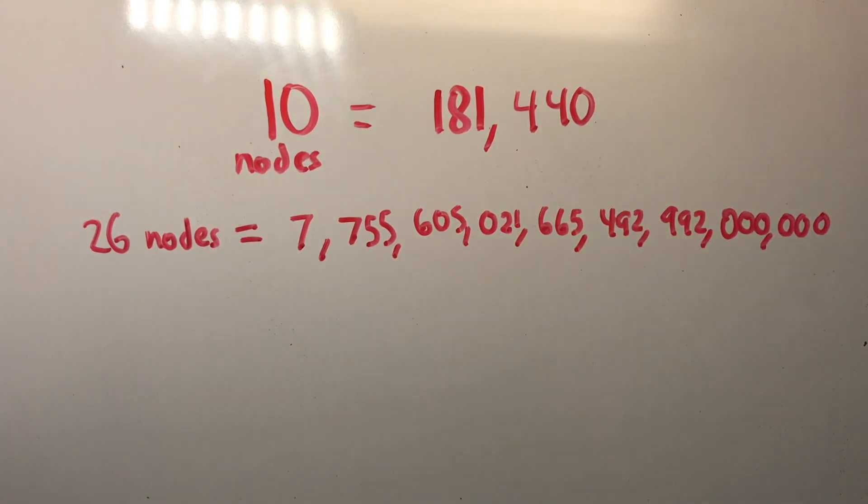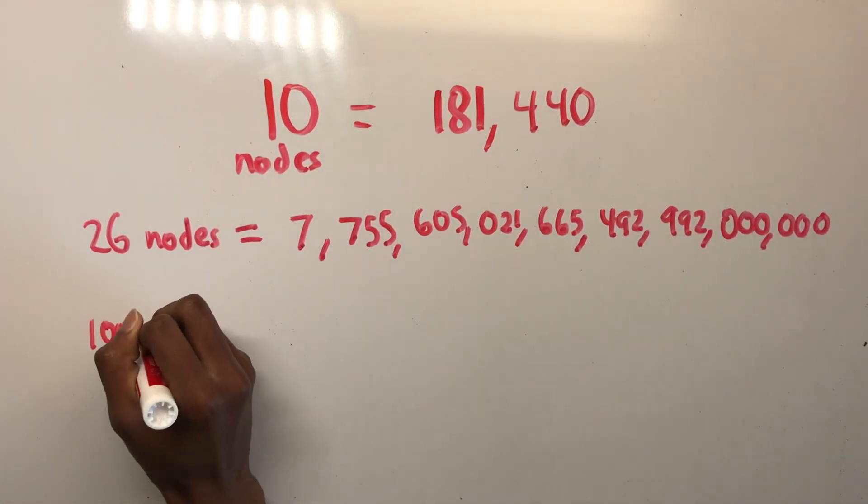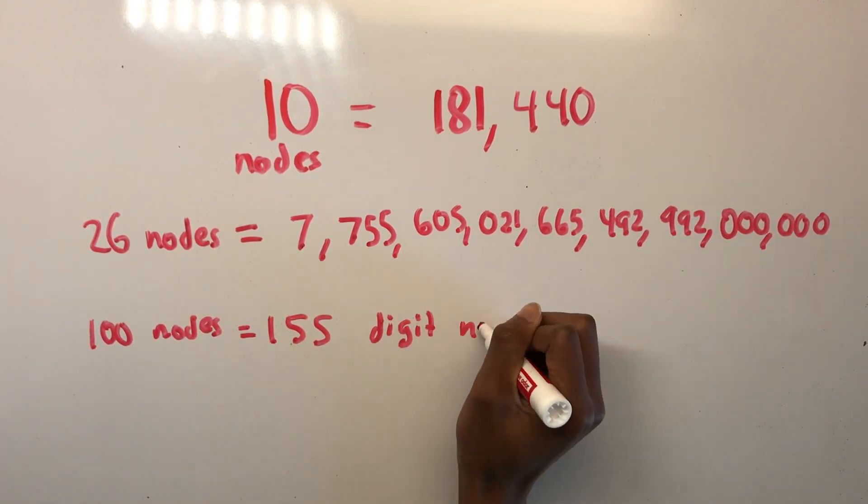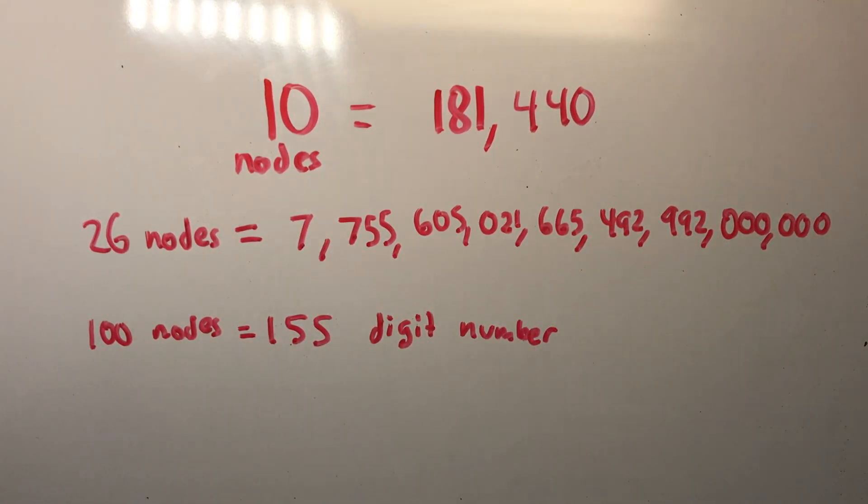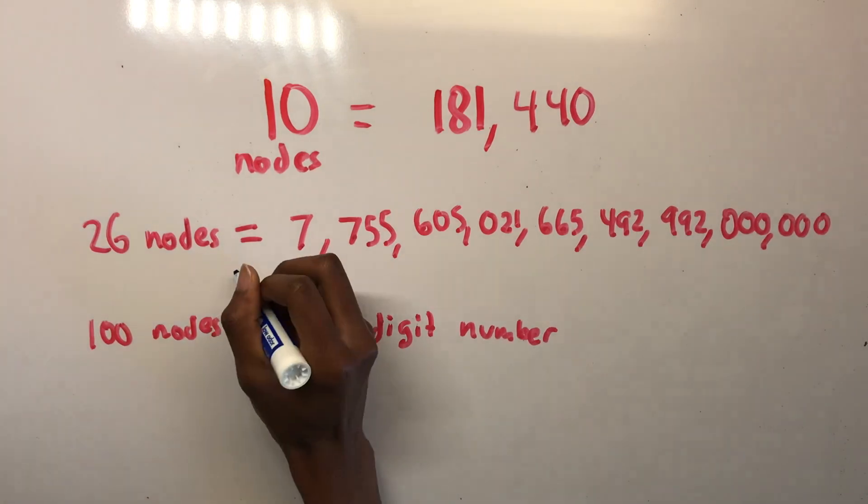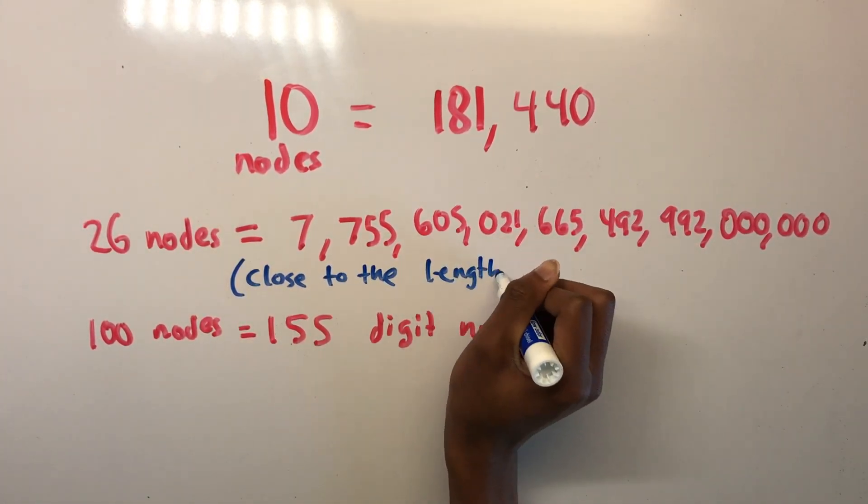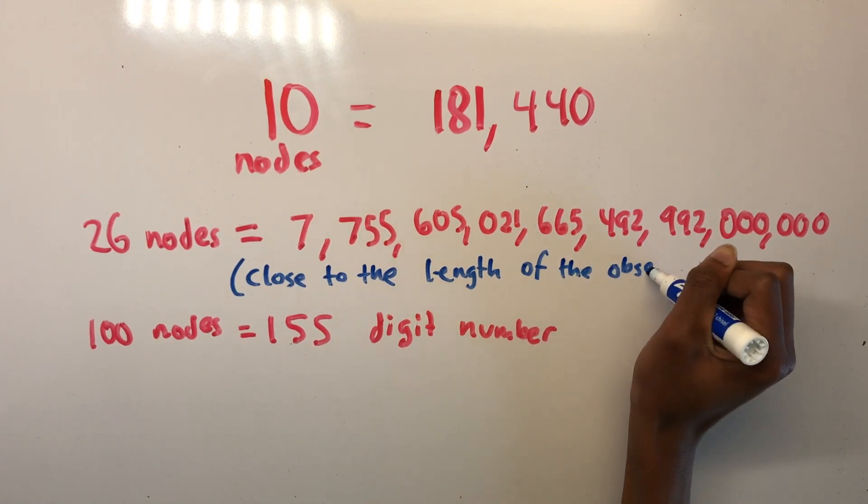By comparison, so you guys could just envision it, the width of the entire observable universe in miles is roughly a twenty-five digit number. With a hundred nodes, you're up to roughly a hundred fifty-five digit number. With more nodes, it just becomes insane for a computer to calculate every possible solution.